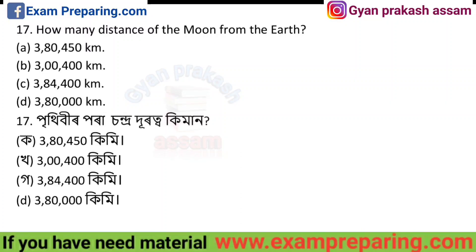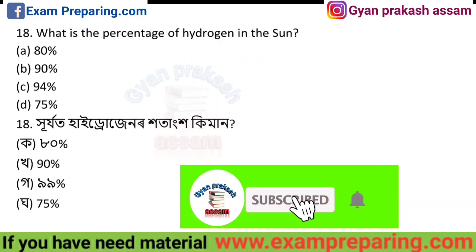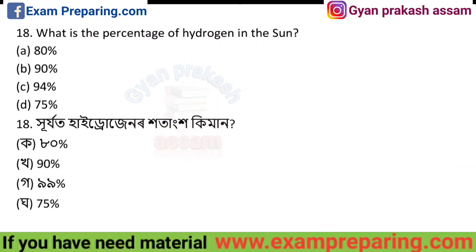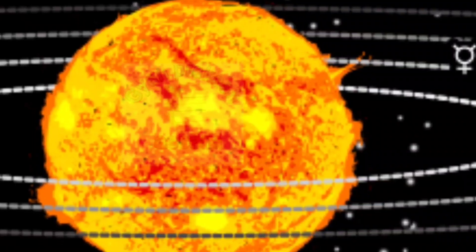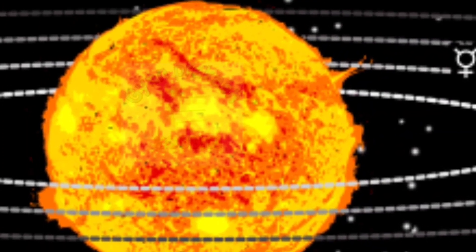The distance of the moon from Earth is 3,84,400 kilometers. What is the percentage of hydrogen in the Sun?